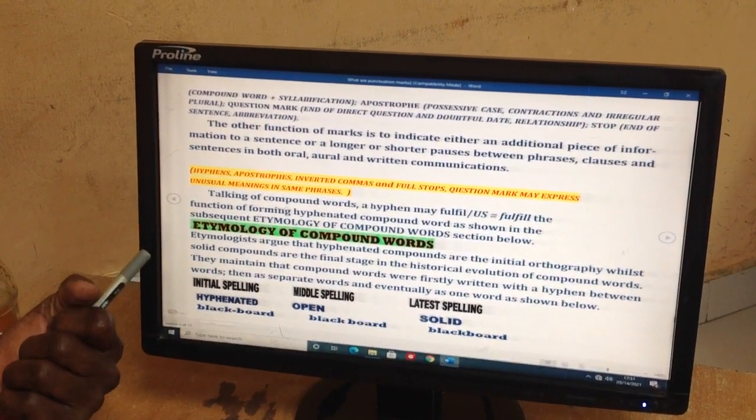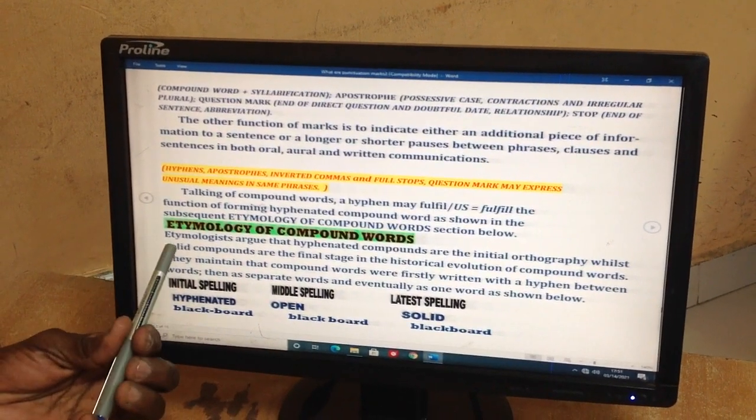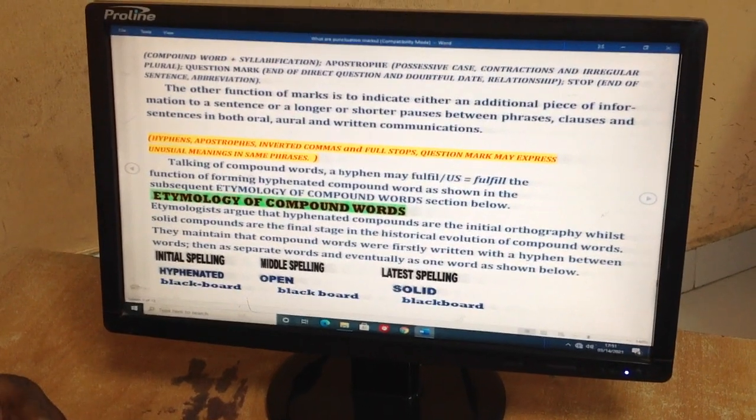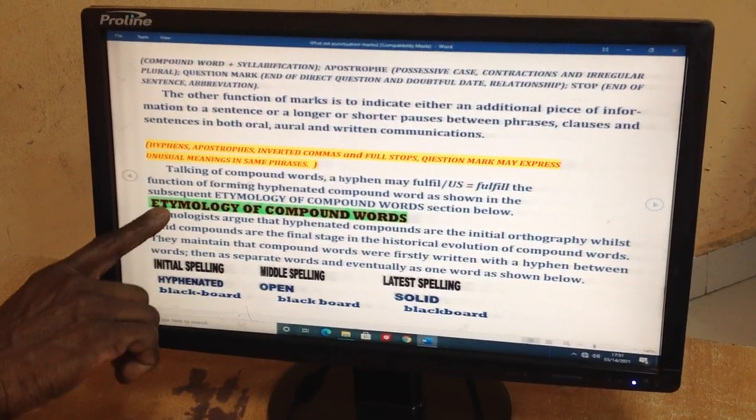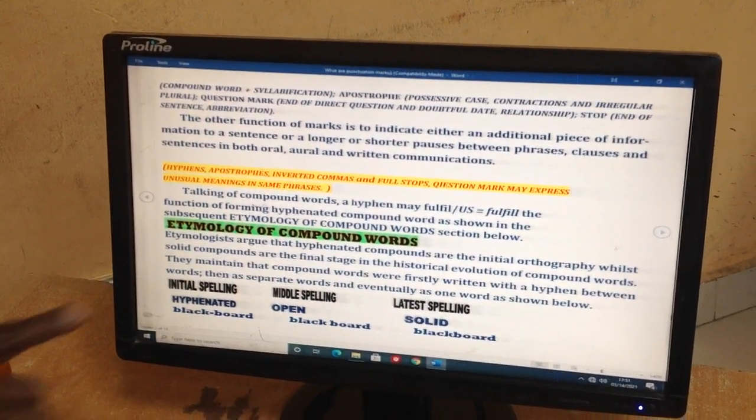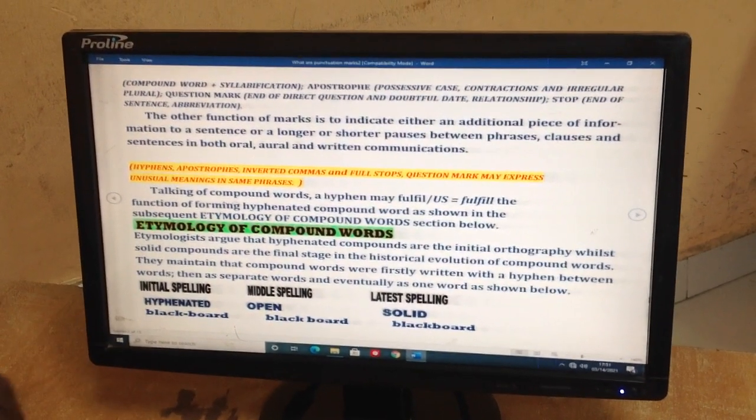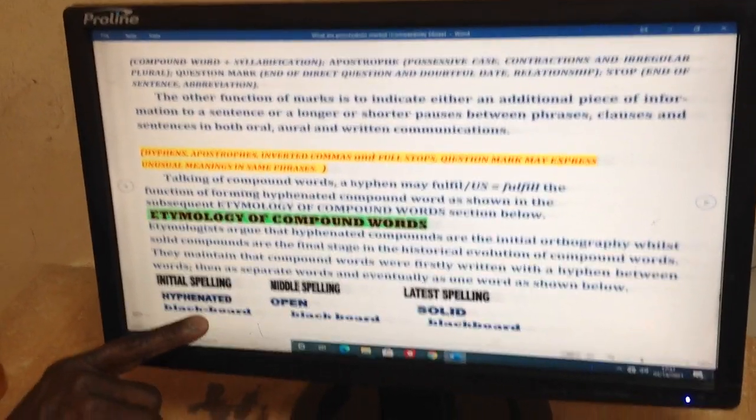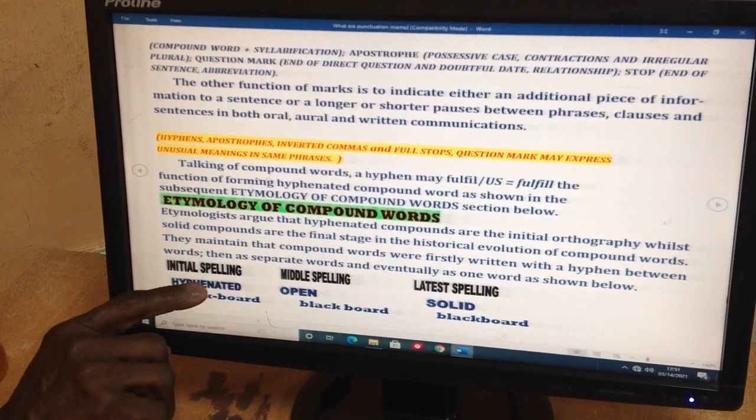We will talk about full stops, hyphens, apostrophes, question marks and a comma. These five do affect the meanings of words. Just now, very recently, I was talking about how hyphens are used to form compound words. As students of language, we need to know where these words are coming from. That's called etymology of compound words. Etymologists tell us that the initial stage of writing a compound word, it must be hyphenated.